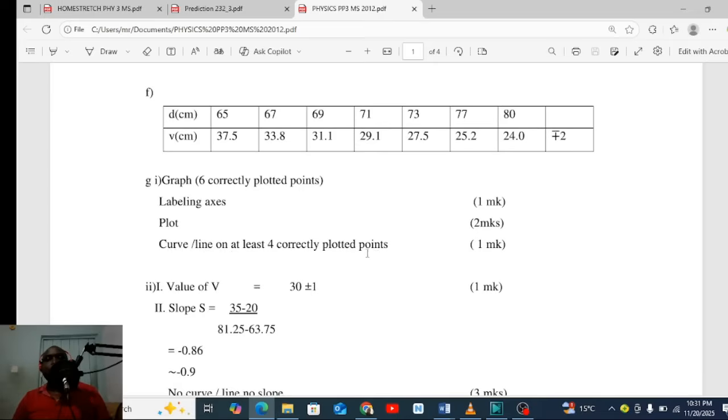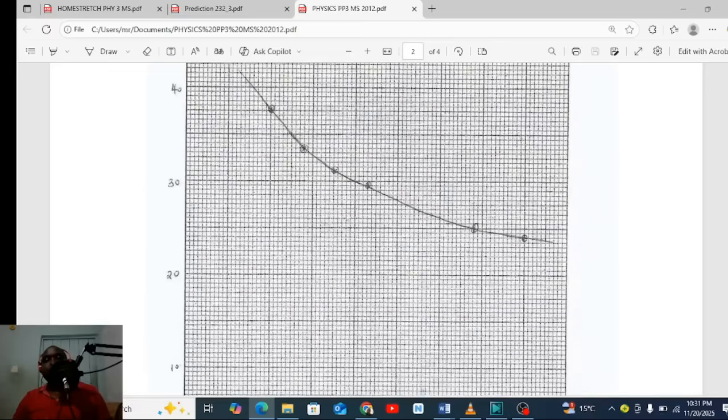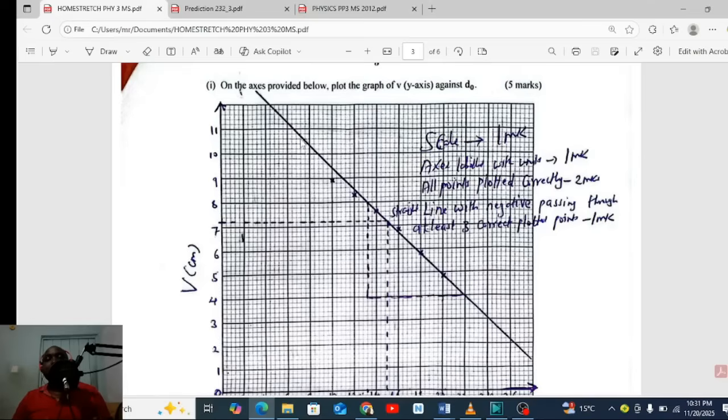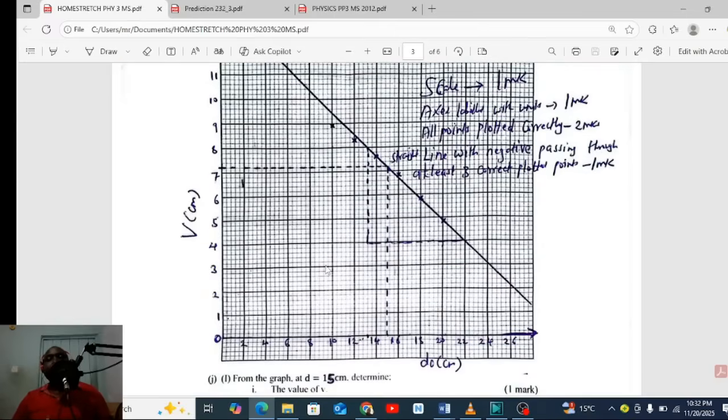Let me show you the marking for 2012. They said plot a curve or a line, at least for correct growth. So it doesn't matter. I encourage you to use a straight line because it is easier. But for 2012, they used a curve, so it is okay if you use a curve. And homestretch, you can see they have used a straight line, and this is a teacher-trained teacher. There is no harm, it is correct. You will score. The most important thing is the table.